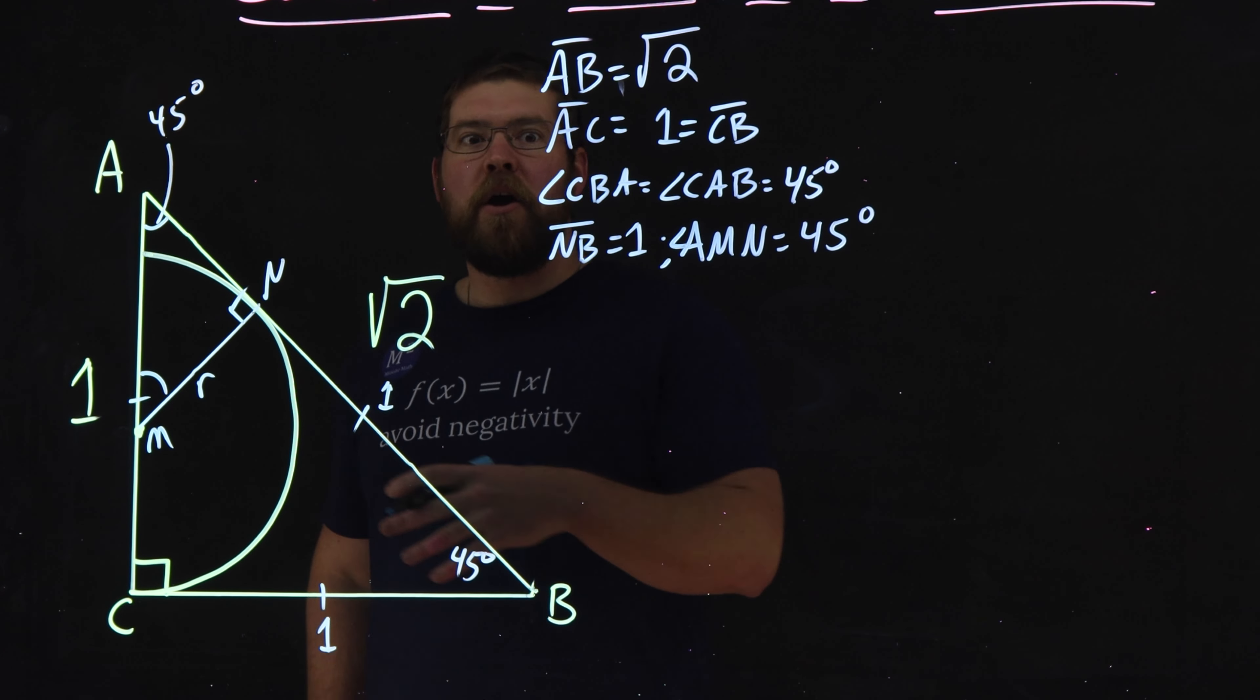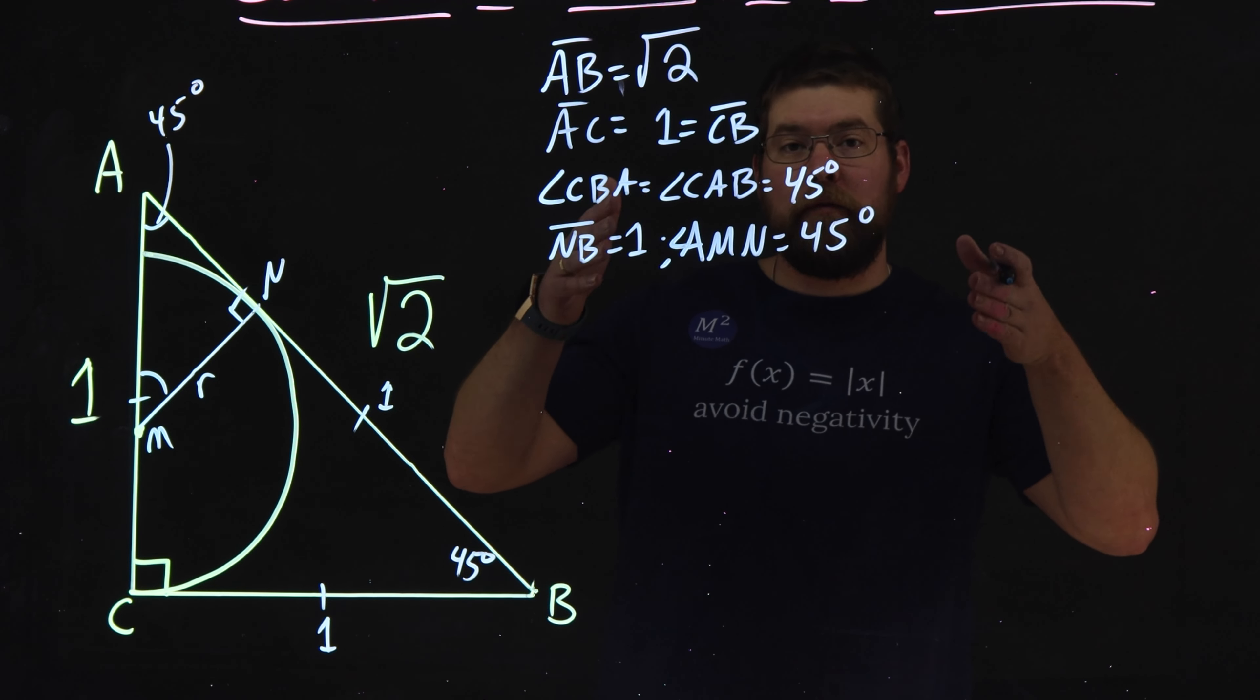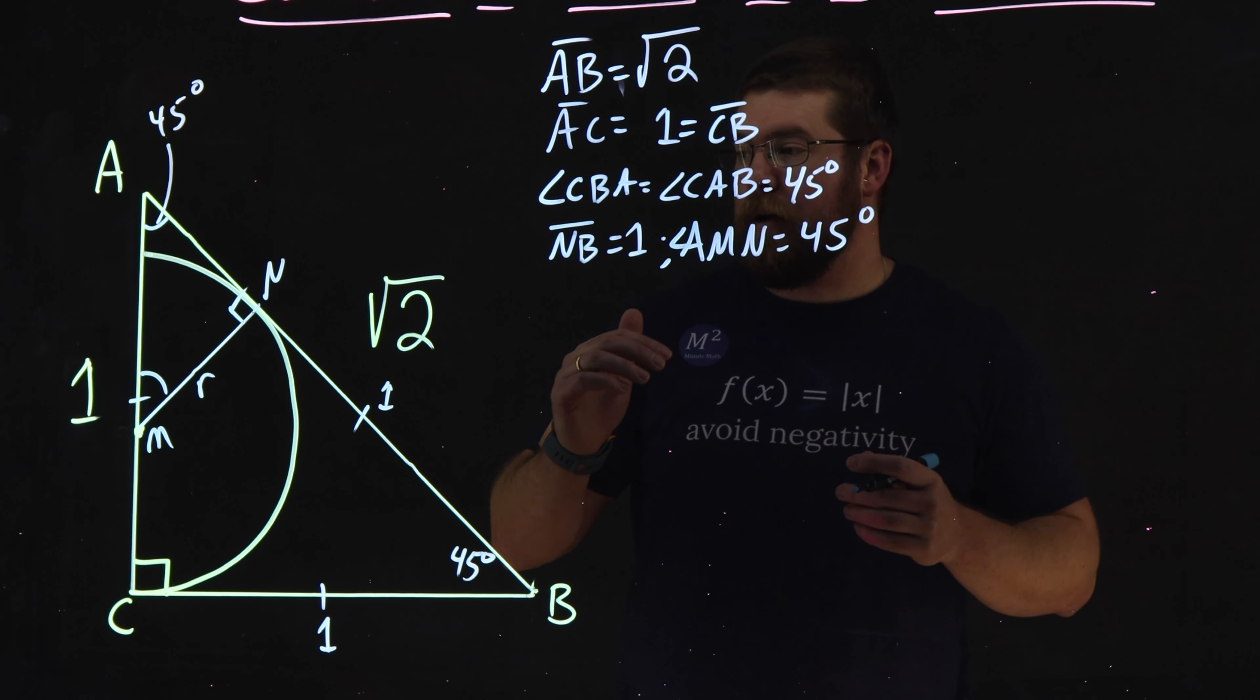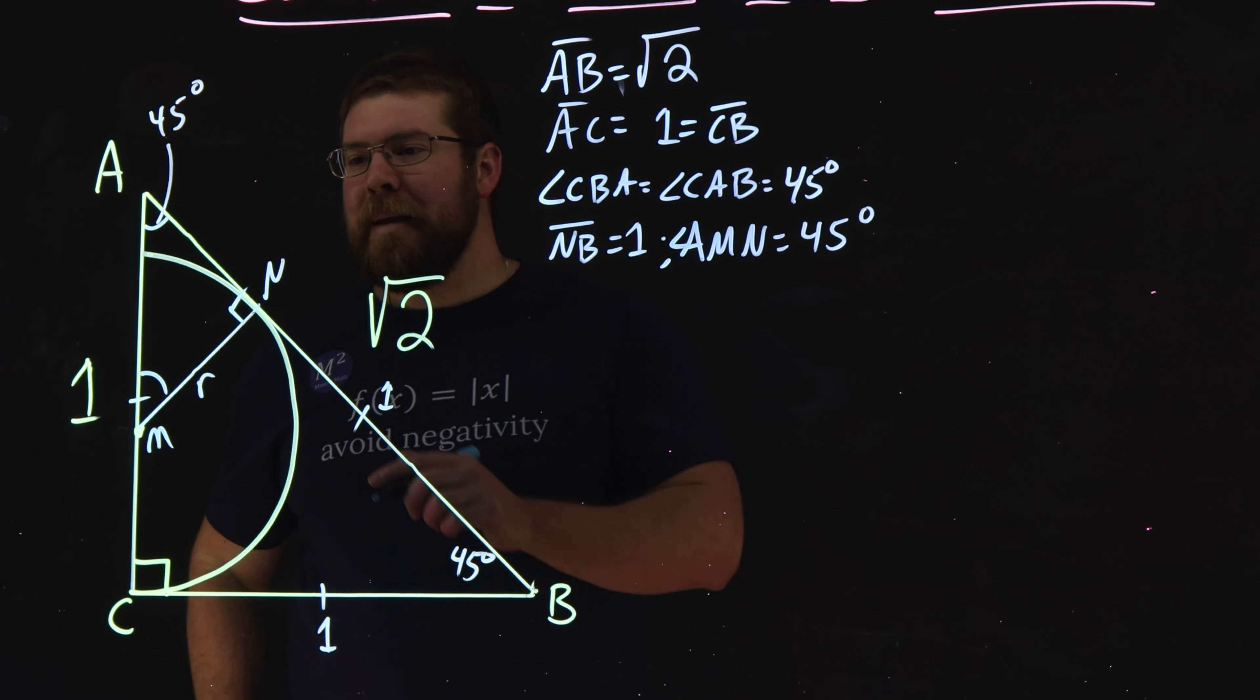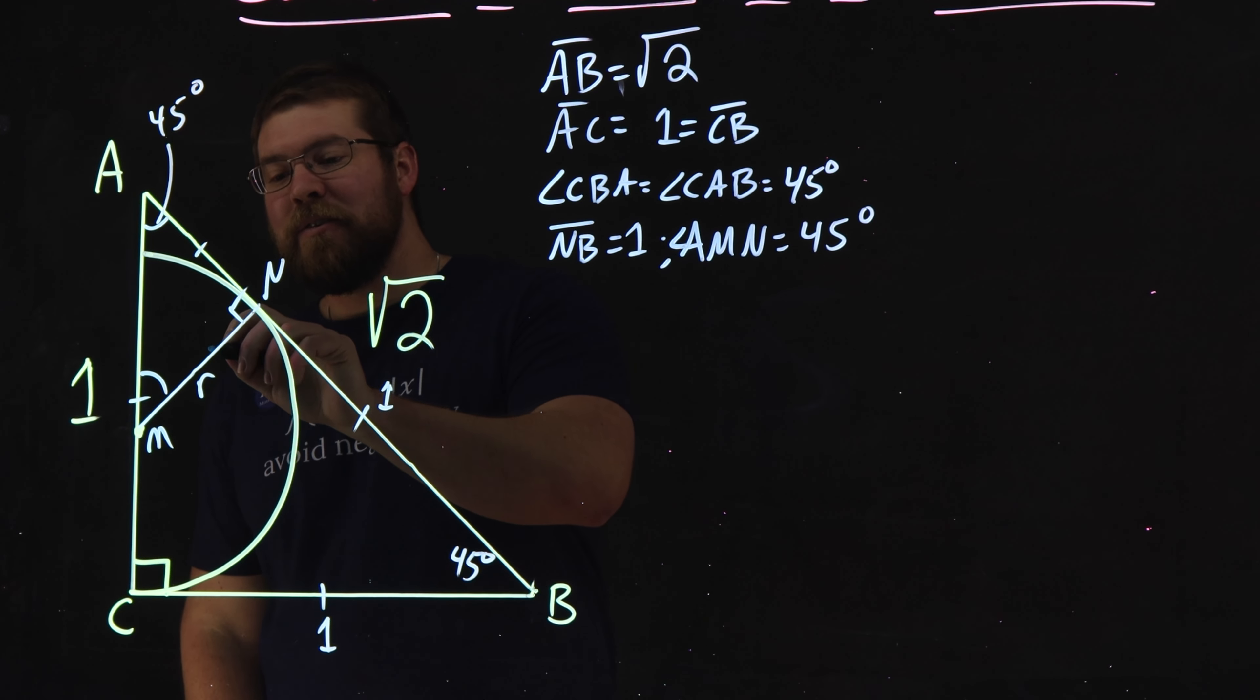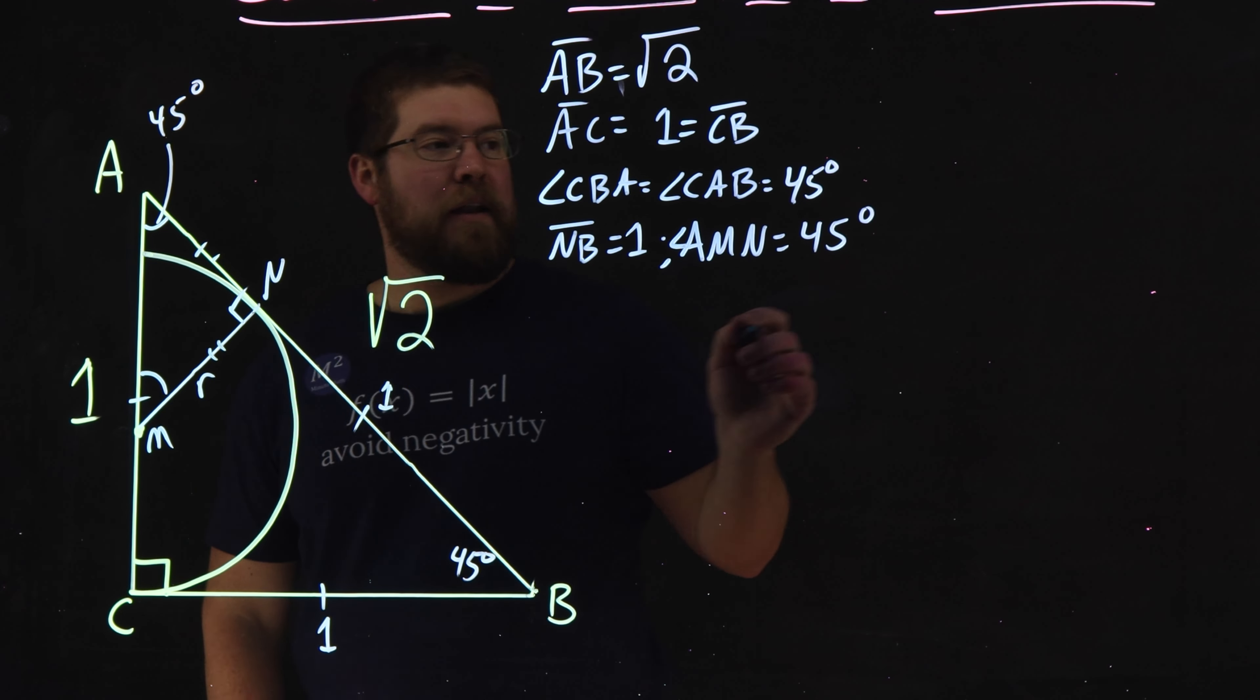How does that help us? Well, again, we have another 45-45-90 triangle, right? 45 degrees, 45 degrees, 90 degree triangle, meaning that AN is congruent to MN.